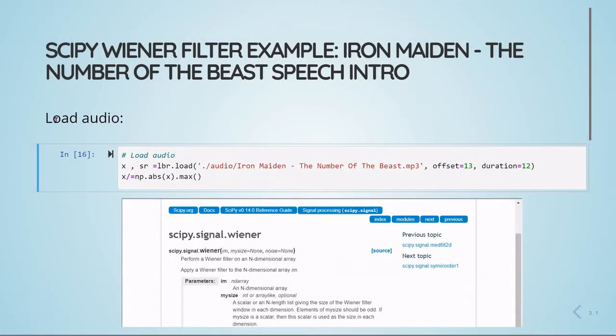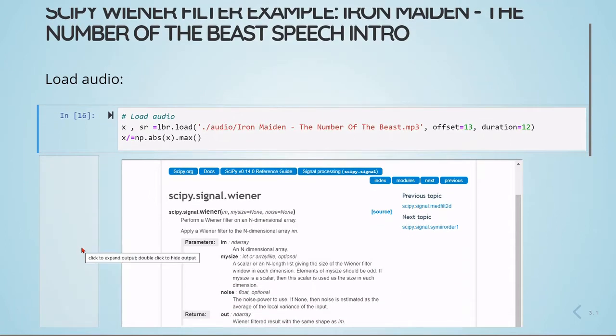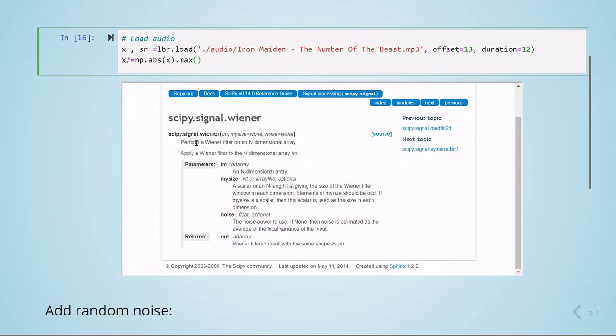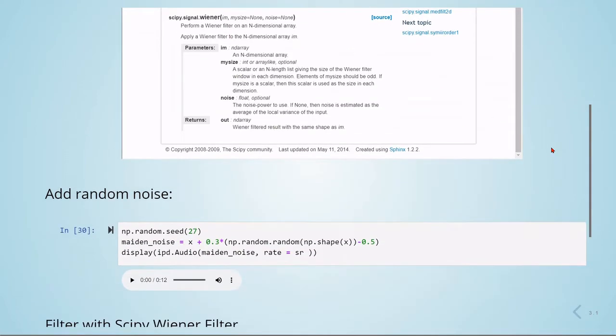To close this notebook we have one more example, but now we are using the SciPy implementation of the Wiener filter. SciPy has this signal Wiener that performs a Wiener filter on an n-dimensional array, and we are going to use the classic Iron Maiden, the number of the beast introduction. Here we see there's a different approach. This implementation of the Wiener filter, if we don't give the noise power as an argument, the noise is estimated as the average of the local variance of the input, and this is what we are going to use.